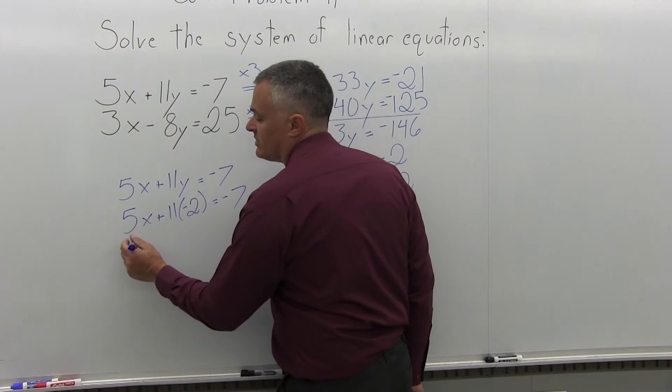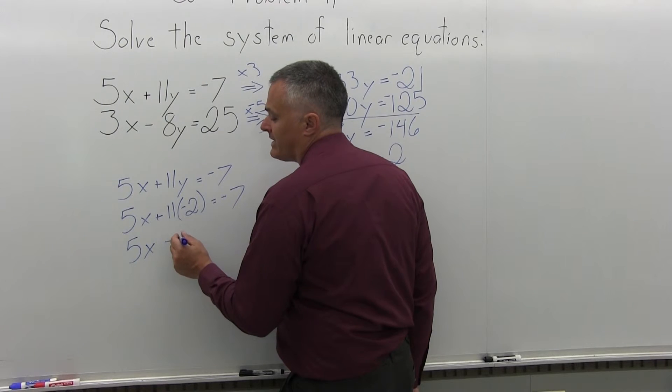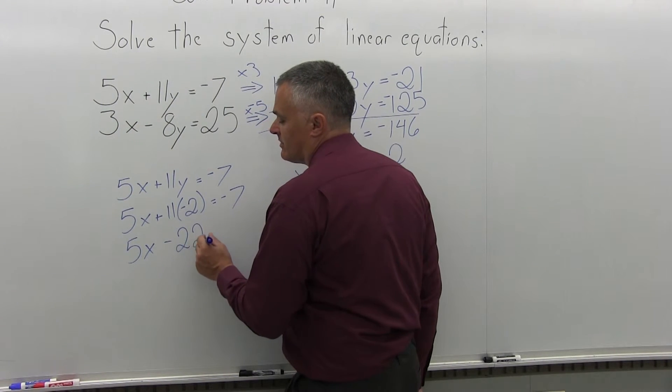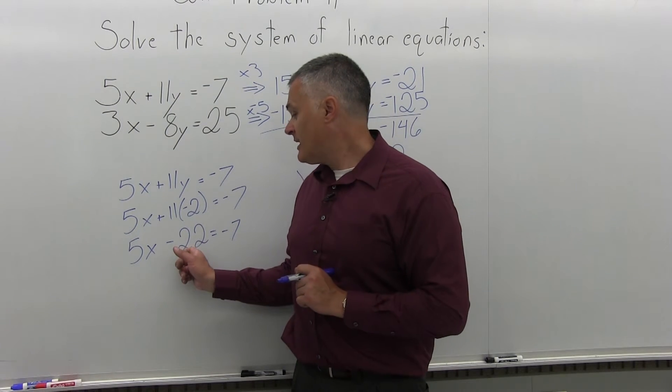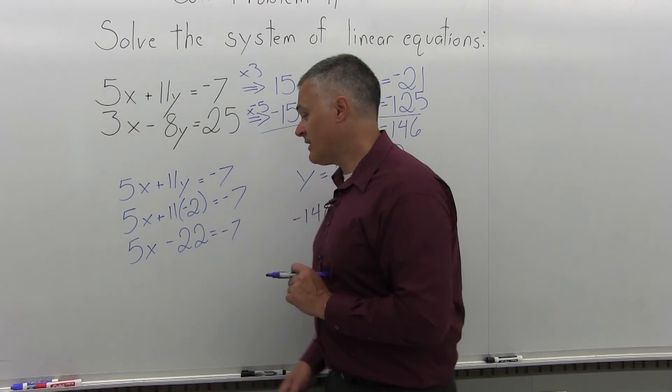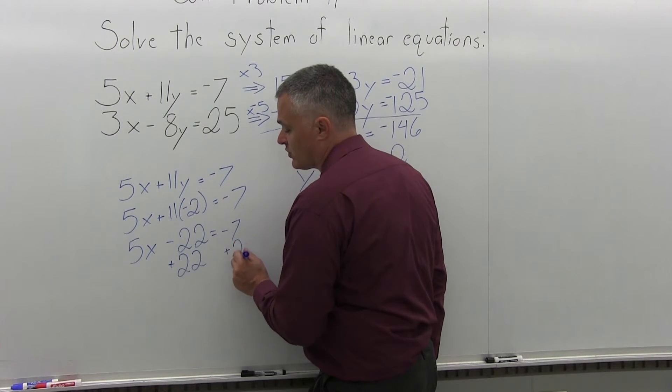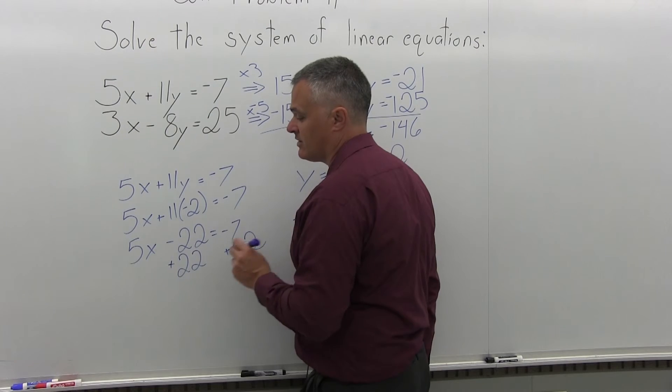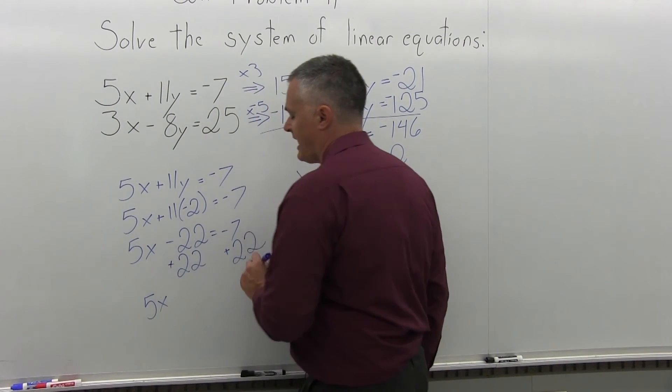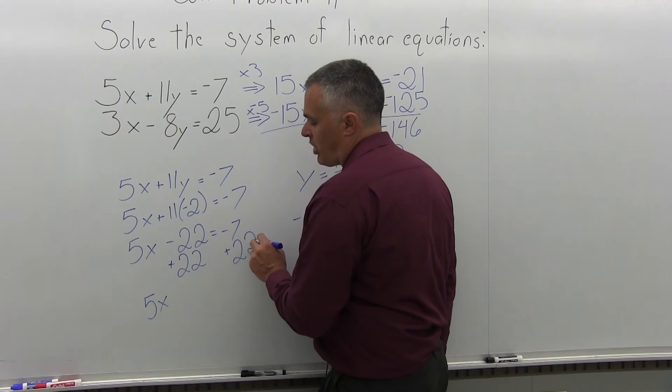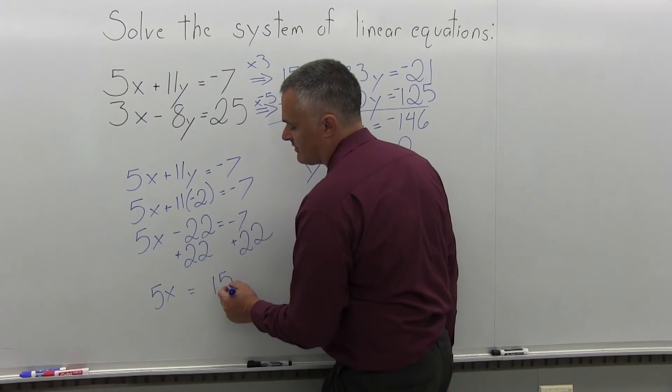Now, 11 times negative 2 will make negative 22. So I have 5x minus 22 equals negative 7. So now I need to get rid of the 22 on the left side of the equals. So I'm going to go plus 22 on the left and plus 22 on the right side of the equals.